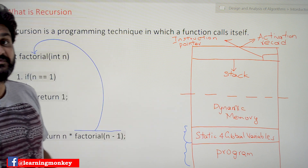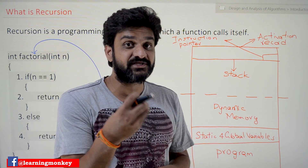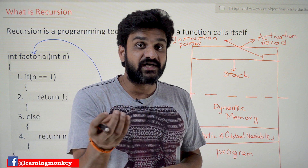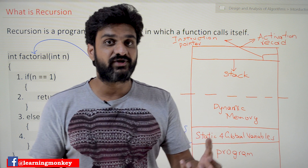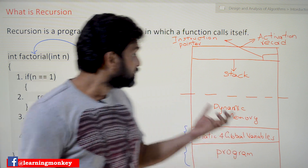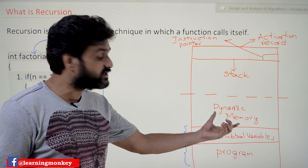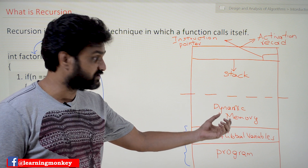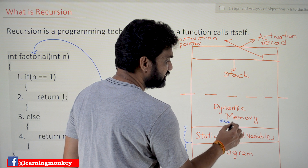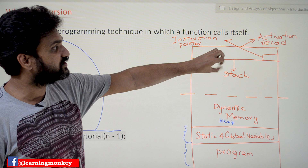The next section is dynamic memory. If the program uses dynamic memory — meaning at runtime memories are allocated using malloc, calloc, or realloc — the memory that is created will get stored in that space. The next data structure in the process memory layout is the stack.